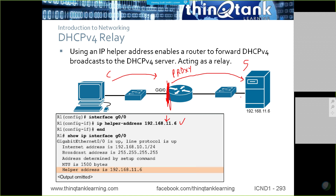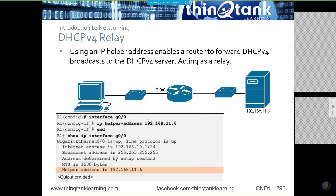The server responds to that relay, and then the router sends the offer to the client. The client has no idea this process is taking place — it simply thinks there's a DHCP server on the subnet. You can have multiple scopes on the server for all subnets in your enterprise. The DHCP server sees which interface the request came from, knows to pull an address from the matching pool, and sends the offer to the router, which forwards it to the client.